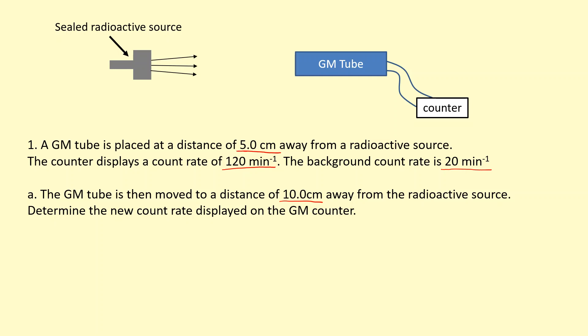The first thing we have to do is notice that the 120 isn't the corrected count rate. We're going to have to subtract the background radiation. So 120 minus 20 gives us a corrected count rate of 100 min⁻¹.